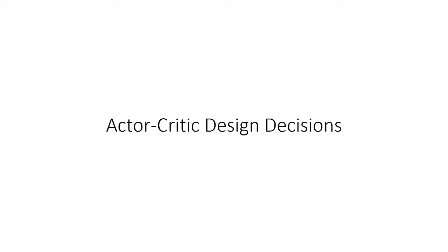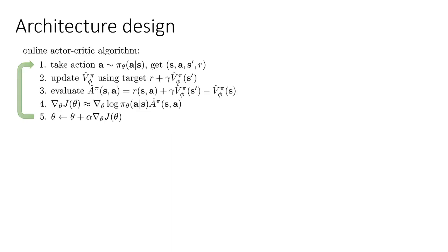Next we're going to talk about some design decisions for actually implementing actor-critic algorithms. We'll start with a discussion of neural network architectures. In order to actually instantiate these algorithms as deep RL algorithms, we have to pick how we're going to represent the value function and the policy. Before in the last lecture we just had the policy to deal with; now we have to represent both of these objects.